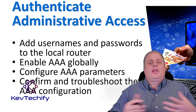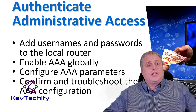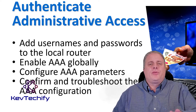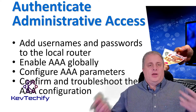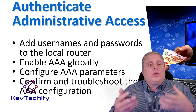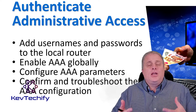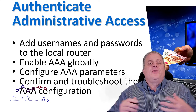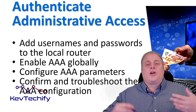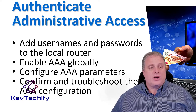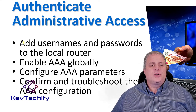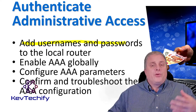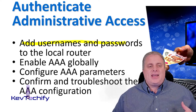The local AAA authentication method is similar to using the login local command, with one exception. AAA also provides a way to configure backup methods of authentication. So if that local username and password isn't working, you can configure different methods — a RADIUS server, a TACACS server. To configure the local AAA services to authenticate administrator access, it requires a few basic steps. The first one is to add the usernames and passwords to the local router database for the users that need administrative access.